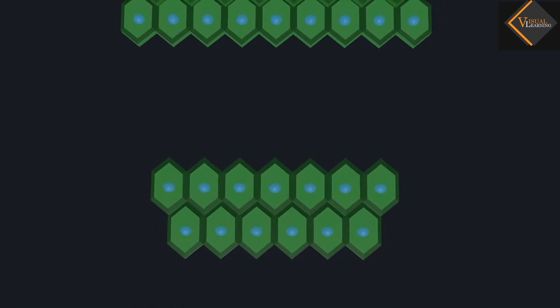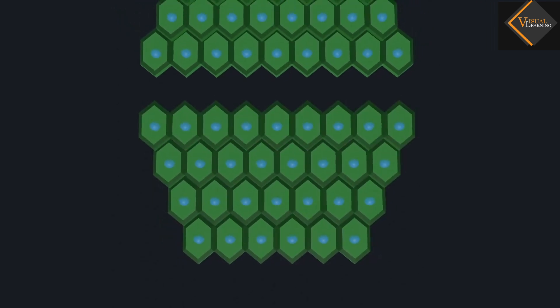Meristematic tissue cells are either undifferentiated or incompletely differentiated, and they continue to divide and contribute to the growth of the plant.